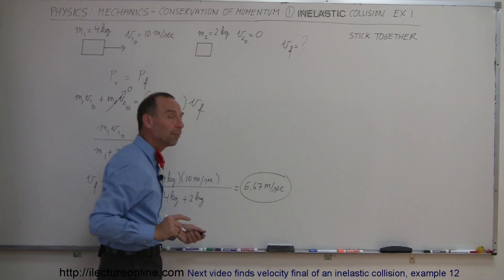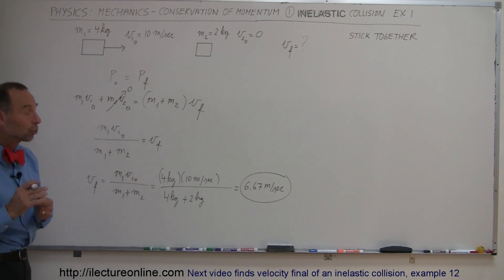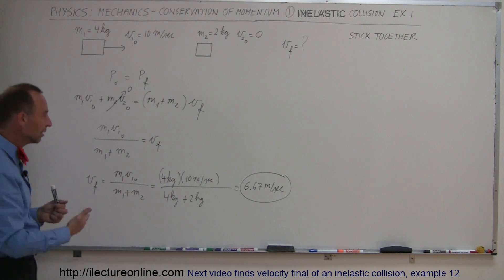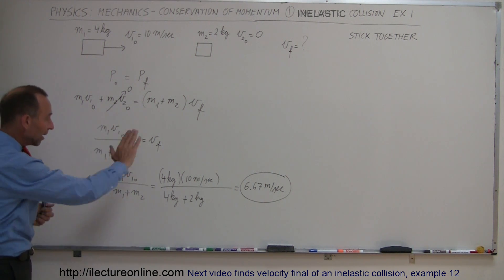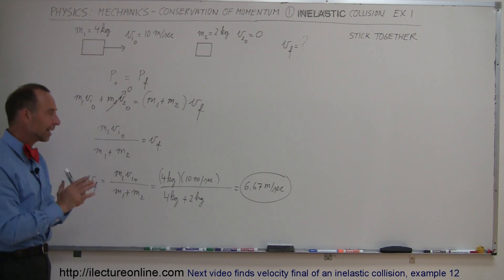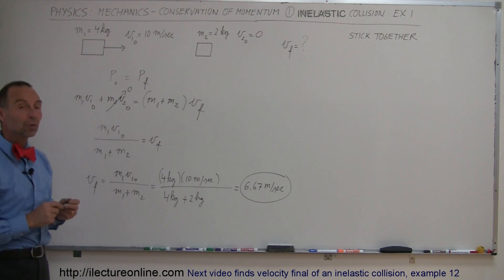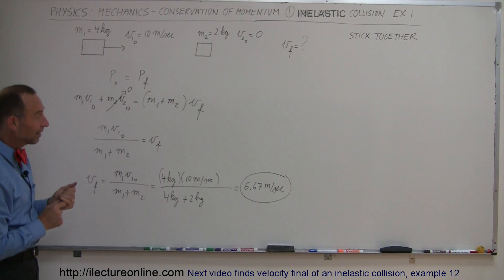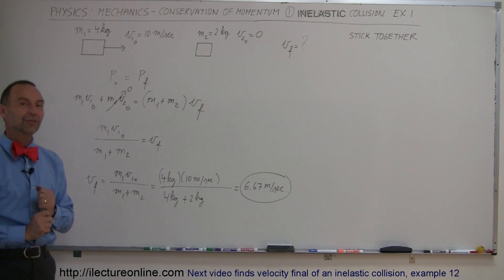Signs are important. Remember, the momentum is a vector quantity. So if something is moving to the left we should put a negative quantity in. If something moves to the right we put a positive quantity in. In this case everything is to the right, we get a positive answer. So when they hit and stick together, their velocity together will be 6.67 meters per second after the collision. And that's how we do that.